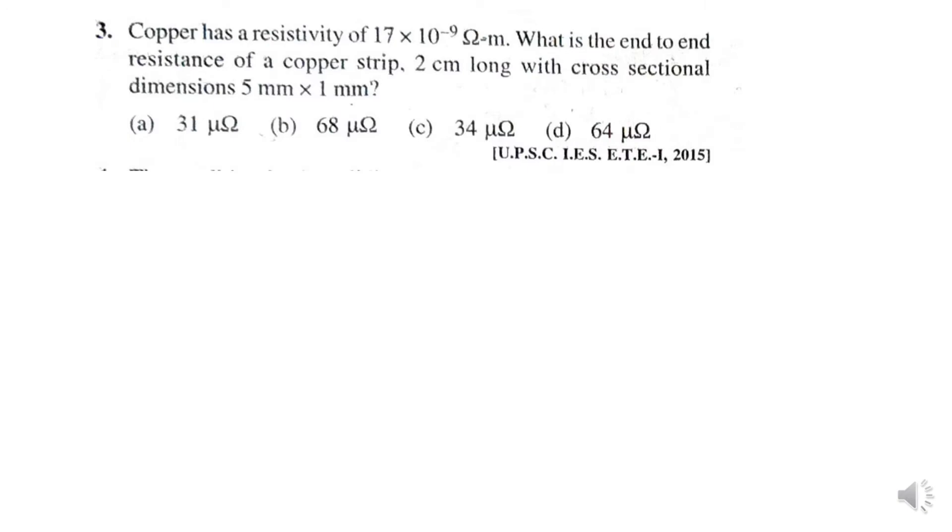Next problem. Copper has a resistivity of 17 into 10 power minus 9 ohm meter. What is the end-to-end resistance of the copper strip? It is 2 centimeter long with cross-sectional dimensions 5 millimeter into 1 millimeter. So first of all you have to write the given data.